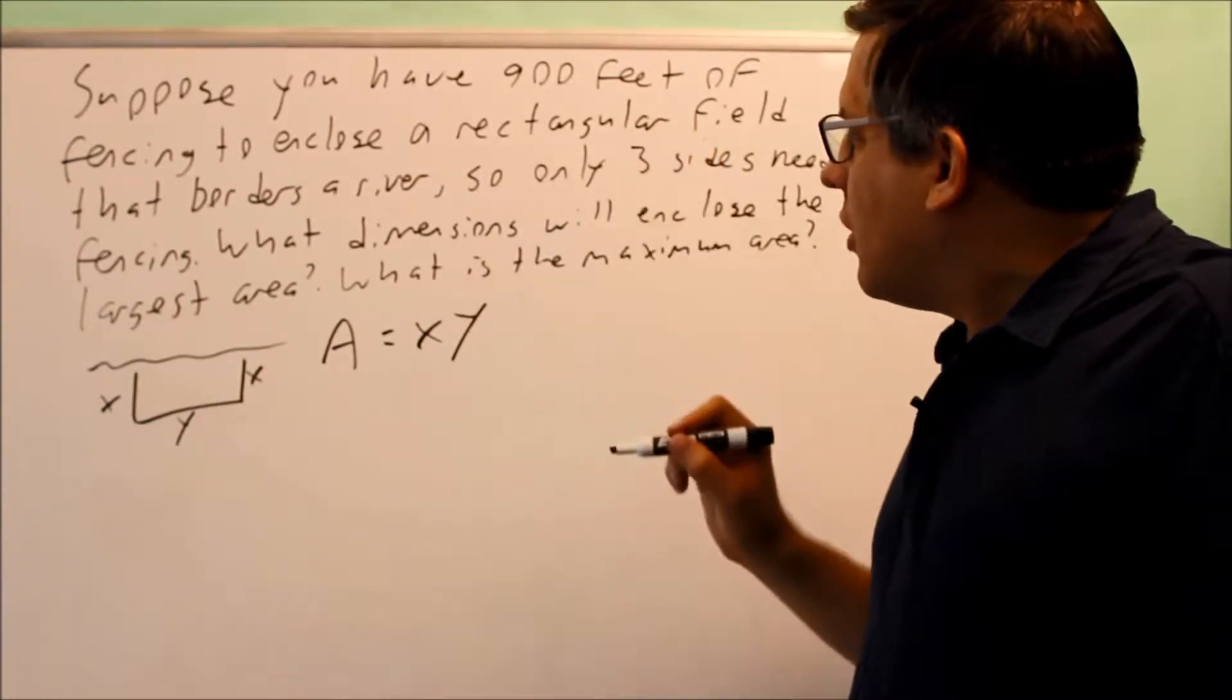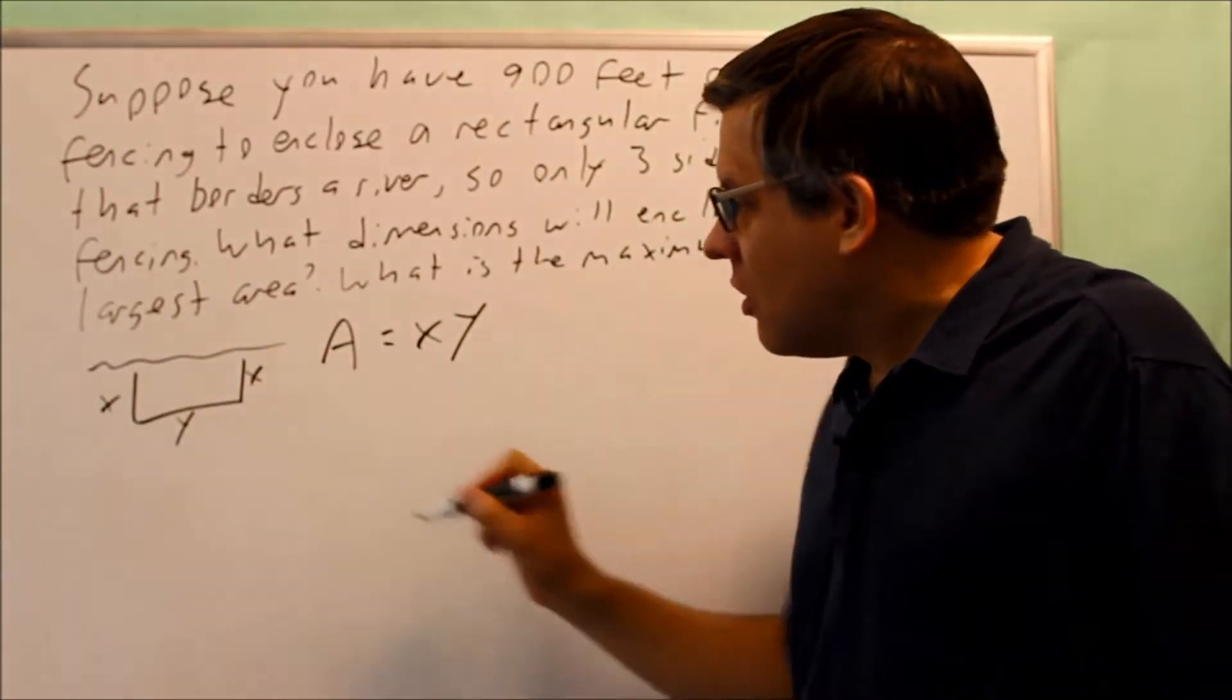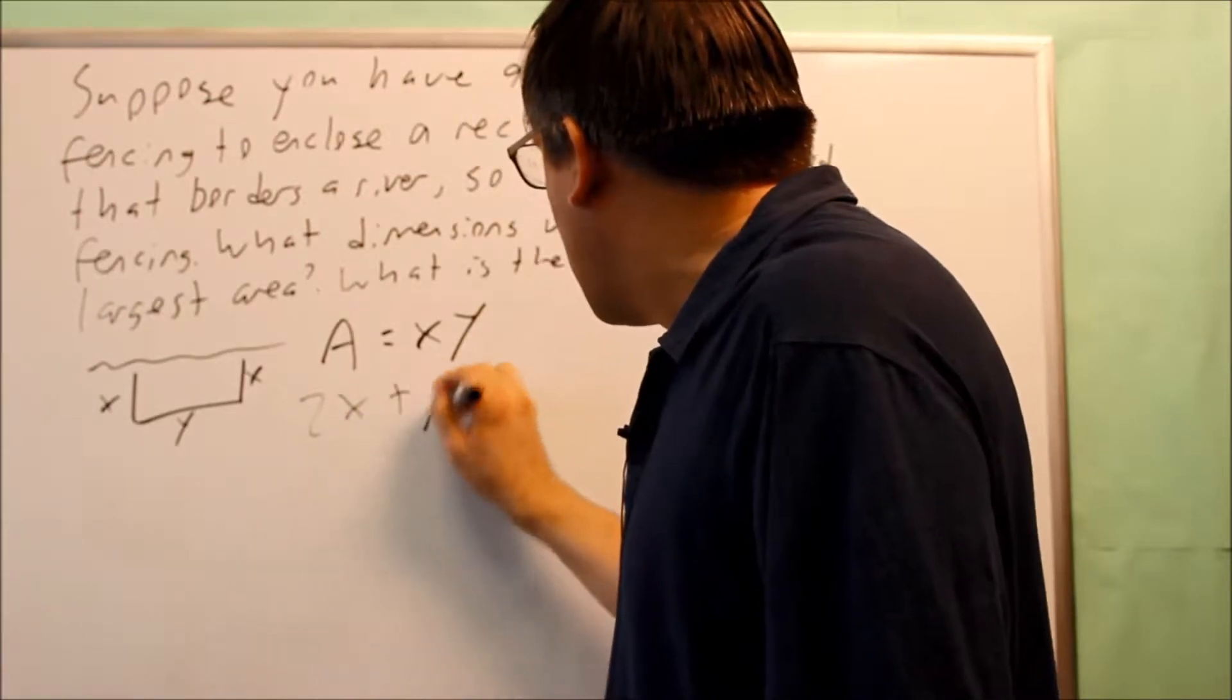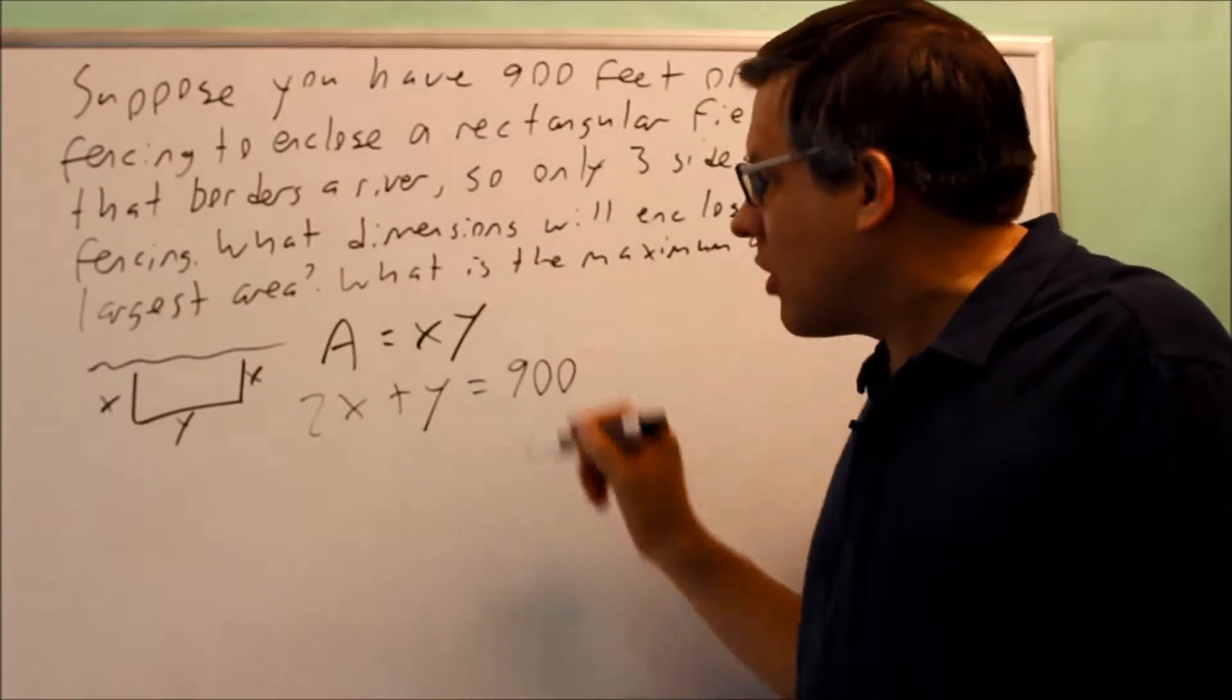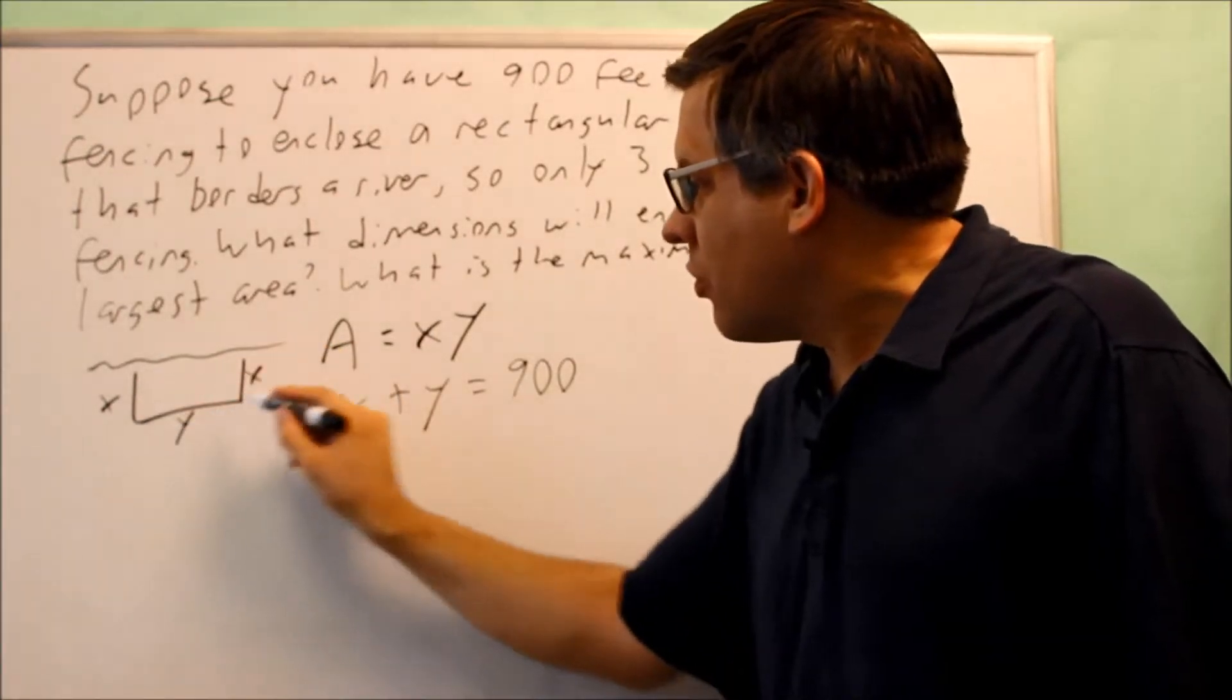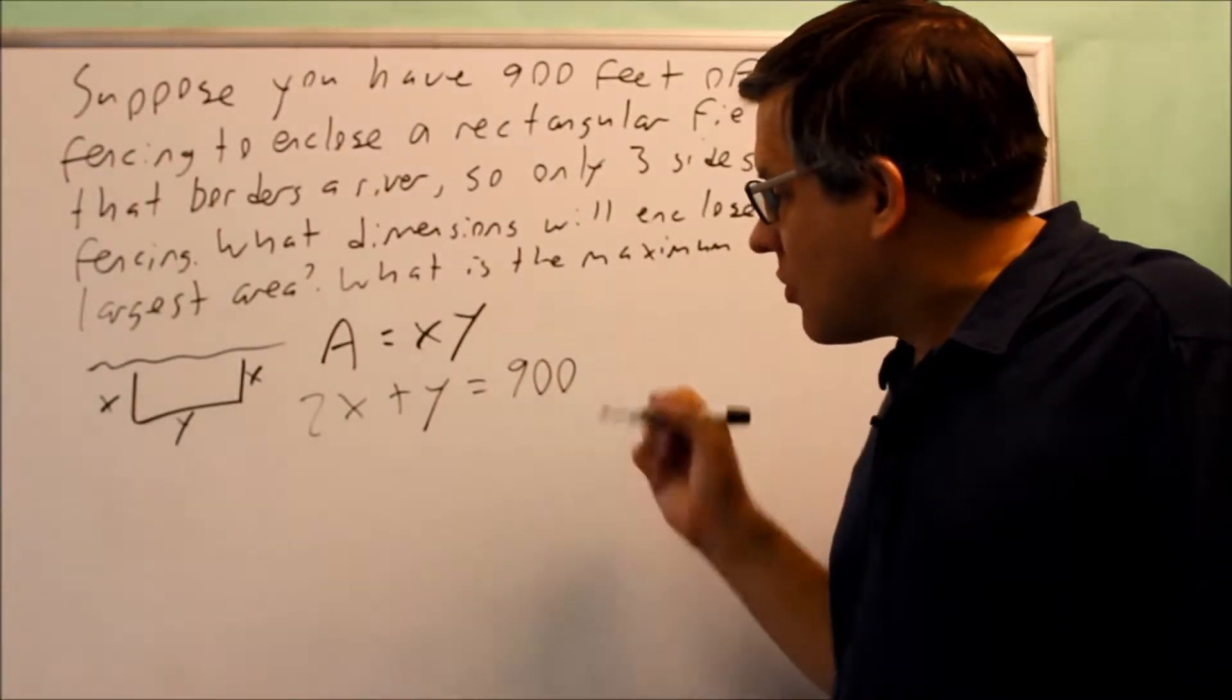They give me 900 feet, which means it's probably important. 900 feet relates to the amount of material used to create these three sides. I have two x's and one y, and if I add that together I should get 900. That's the second equation—this is kind of like a perimeter.